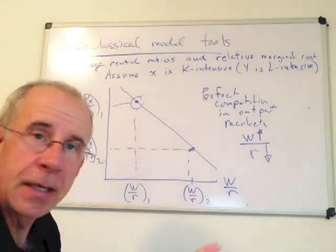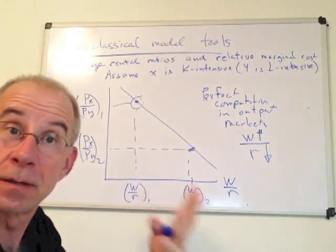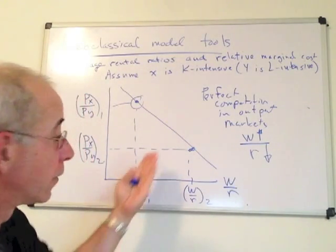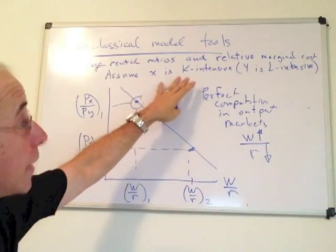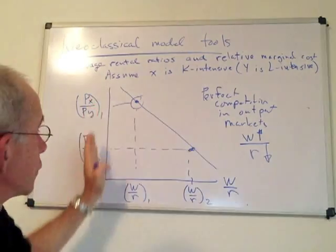So we haven't put this in any kind of trade context, but this is a general relationship for given technologies for good X and good Y with X as the capital-intensive good and having this relationship between the wage-rental ratio and relative prices.